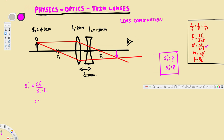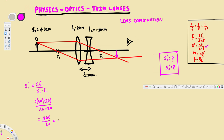This gives us 40 times 20, the focal length of the converging lens, divided by 40 minus 20. That is 800 divided by 20, which gives us 40 centimeters.